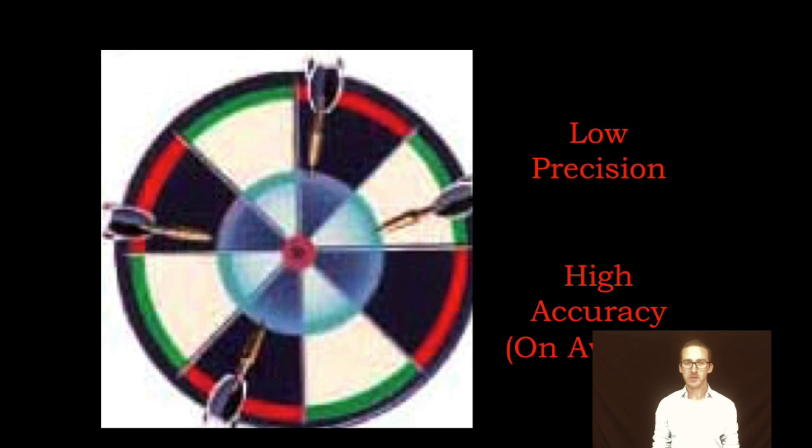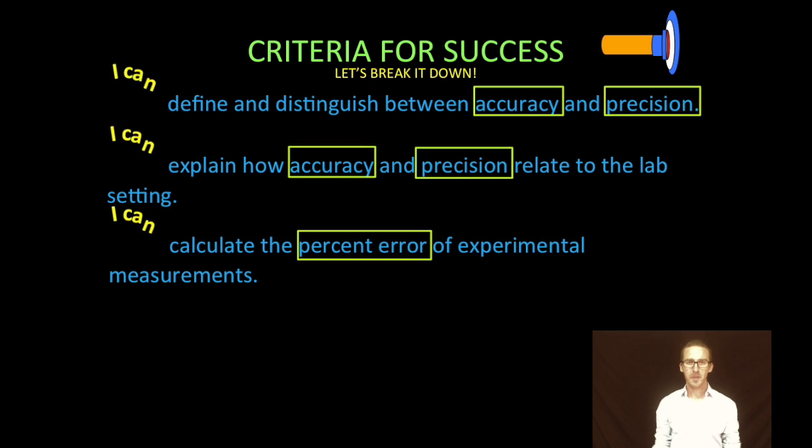So even though we're all over the place, not very precise, on average we would be pretty accurate. Okay, so as we come back to our criteria for success, breaking it down, we've defined and sort of distinguished between accuracy and precision. We're going to talk a lot more about how accuracy and precision relate to the lab setting when you're in class, but now let's talk about percent error.